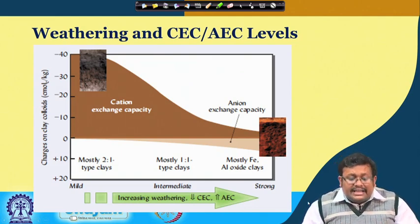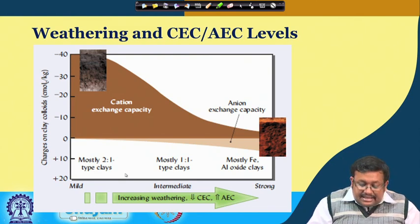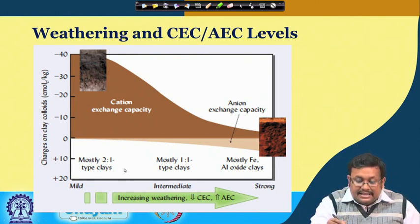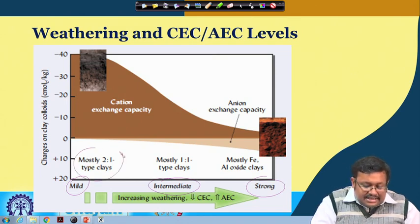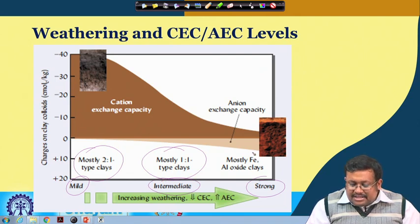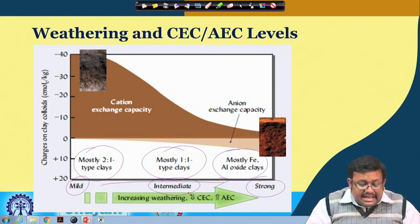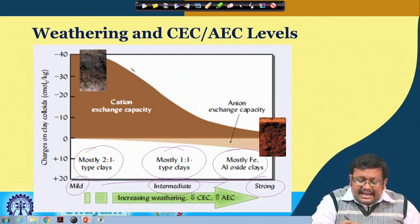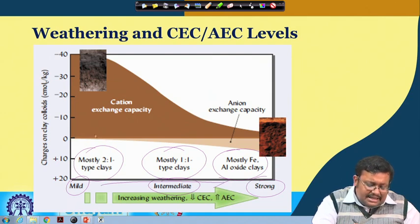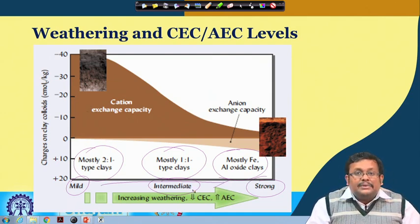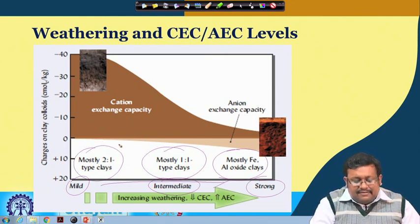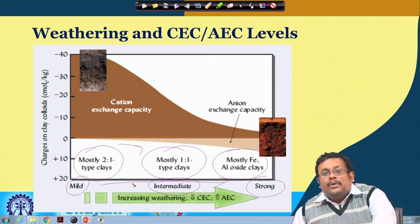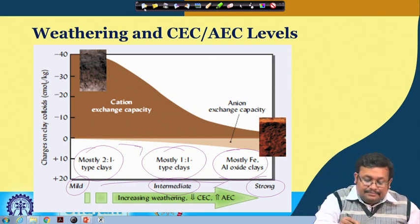Regarding the relationship between weathering and CEC/AEC levels: three conditions are shown — mild weathering (2:1 type clays), intermediate weathering (1:1 type clays), and strong weathering (mostly iron and aluminum oxide clays). As weathering increases, cation exchange capacity decreases — from highest in 2:1 type soils, reducing in 1:1 type soils, to nearly zero in iron-aluminum oxides. Conversely, anion exchange capacity shows the reverse trend, increasing from mild to intermediate to strong weathering conditions.